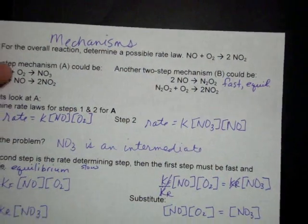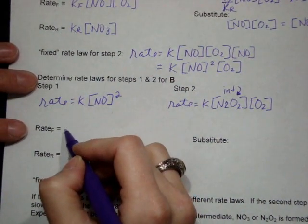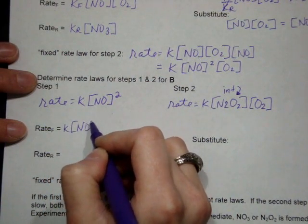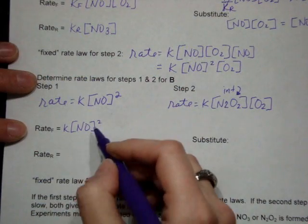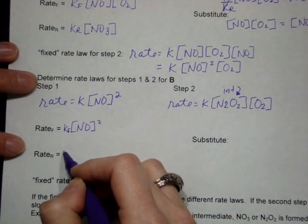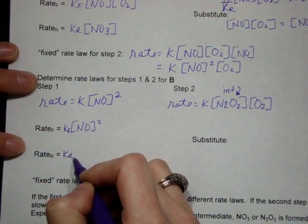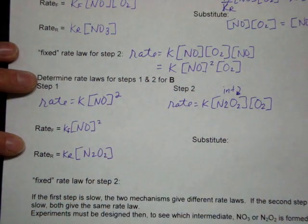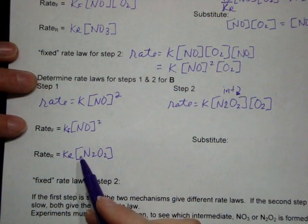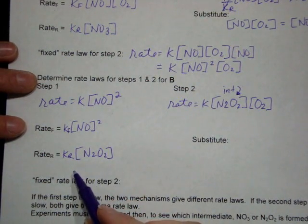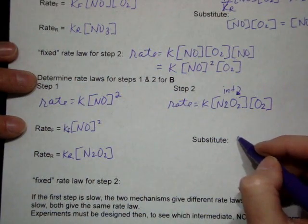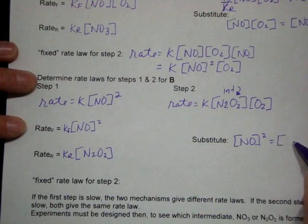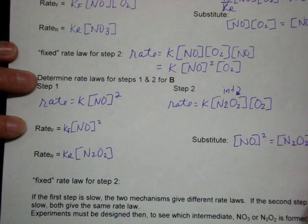And if we assume that, then we can make the same change as we did before. Rate forward for that reaction would be K NO squared, again for step one. Rate reverse, K reverse times N2O2. Based on, again, the definition of equilibrium, rate forward equals rate reverse. We can show that NO squared should equal concentration N2O2.